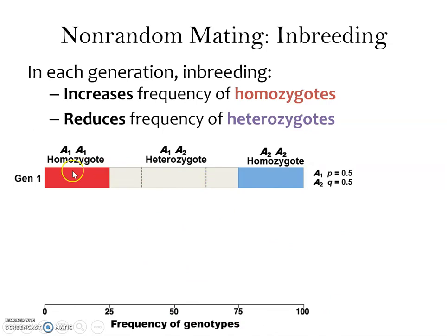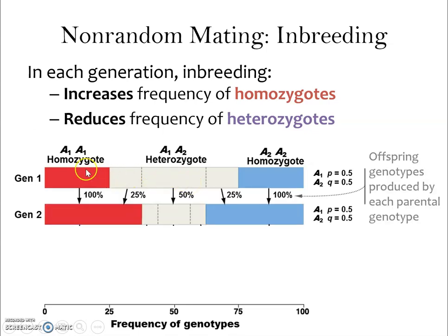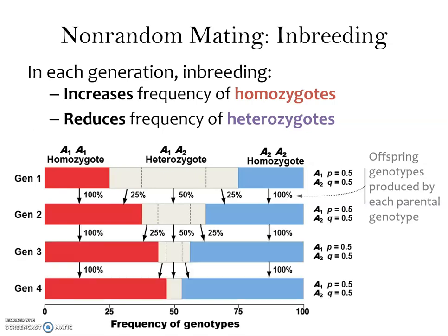In generation one, all of the homozygotes mate with themselves and make more homozygotes. The heterozygotes mate with each other — they'll make some homozygotes of each type and some more heterozygotes. In the next generation, all homozygote offspring make homozygotes (100%), a quarter of heterozygote offspring become each type of homozygote, and only half of heterozygote offspring remain heterozygotes. In this model, individuals are just replacing themselves in terms of reproduction.